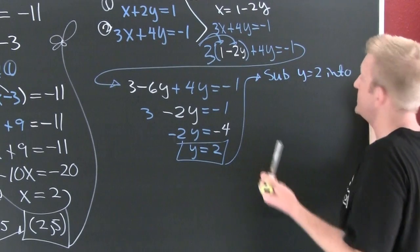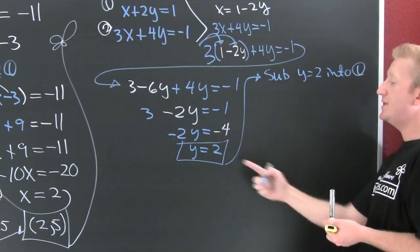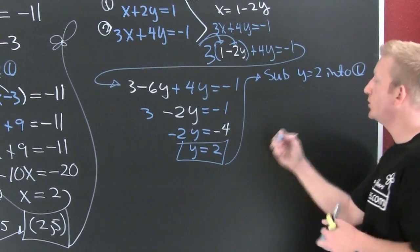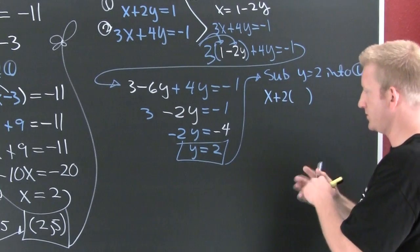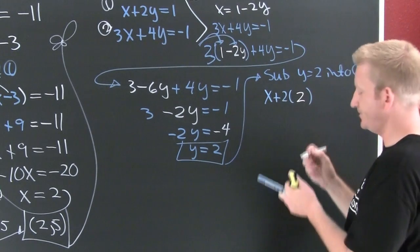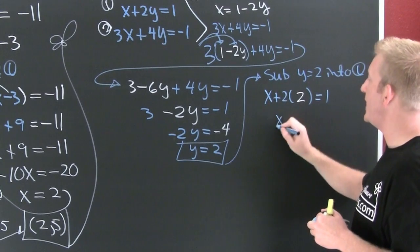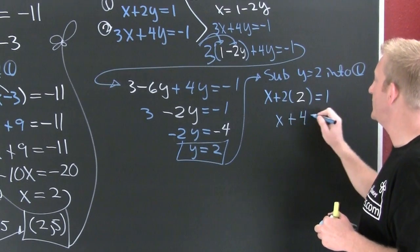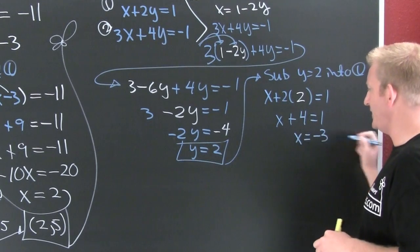So in one, everywhere I see a y I'm gonna put a 2. So I have x plus 2 times 2, that's gonna be equal to 1. So then x plus 4 is 1. Finish him. And x is equal to minus 3.